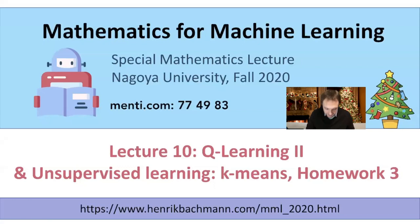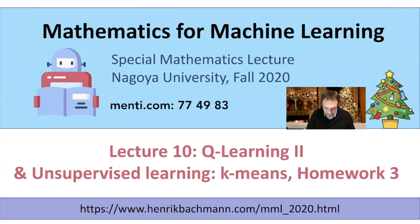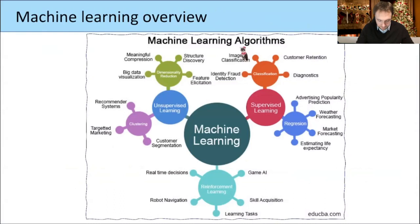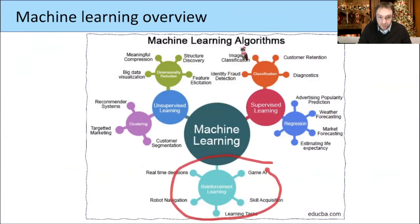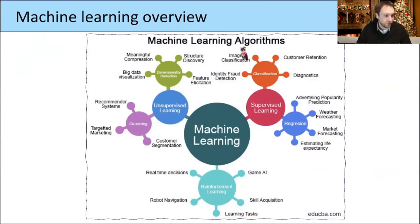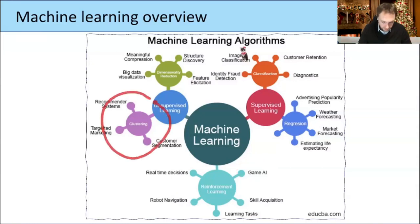Welcome to lecture number 10. First I will go through the reinforcement learning again, and then in the second part of this lecture I will talk about unsupervised learning and the so-called k-means clustering algorithm, which you should implement in homework number three. Recall that after doing a lot of examples in the supervised learning world, we started last time talking about reinforcement learning, and then later we will go to clustering, which is part of unsupervised learning.